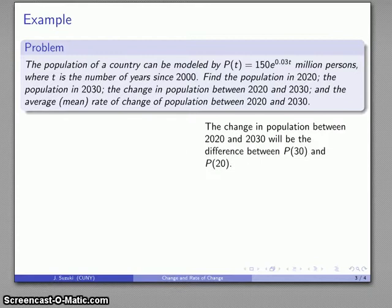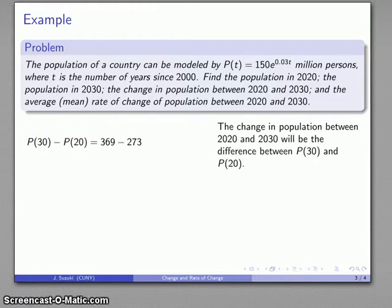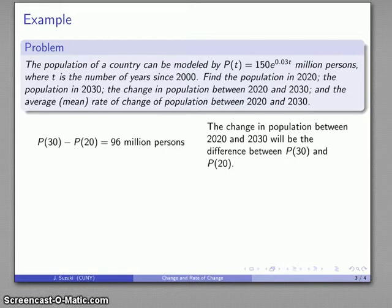With calculus, we'll actually look at the change in quantity. Here the change in population is just the difference between where we were in 2030 and where we were in 2020. It's always end minus beginning. So that difference, 369 minus 273, equals 96. Important note: don't forget to include those units. Population is measured in millions of persons, so the change in population is measured in millions of persons.